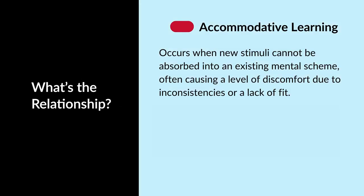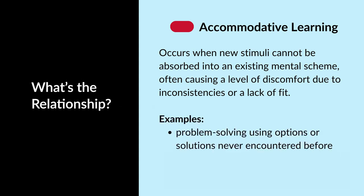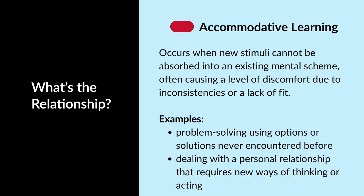Third, accommodative learning occurs when new stimuli cannot be absorbed into an existing mental scheme, often causing a level of discomfort due to inconsistencies or a lack of fit. The existing scheme must be broken down to allow the acquisition of new stimuli to occur successfully. This process may be short or longer in situations where individuals need to rebalance their sense of equilibrium while creating a new mental structure. Examples include problem solving using solutions never encountered before, or when dealing with a personal relationship that requires new ways of thinking or acting.